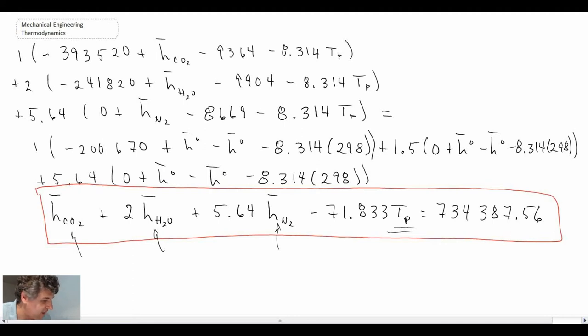and with those temperatures, we can then interpolate between the answers and help us converge on the final adiabatic flame temperature. So I'm going to guess two temperatures, and then we will go ahead and read the values from the table and see what we get, and then we'll do an interpolation.